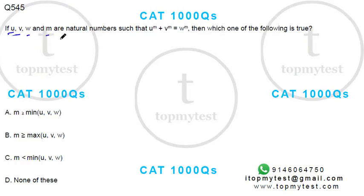It says u, v, w, m are natural numbers such that u to the power m plus v to the power m equals w to the power m. So the index is the same. Which of the following is true?